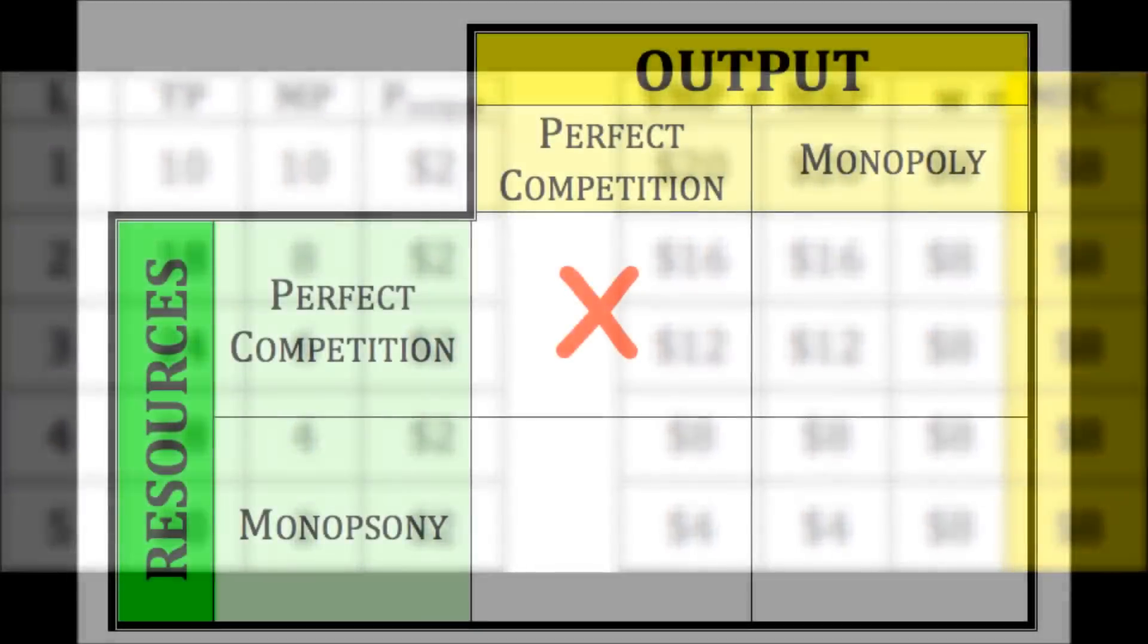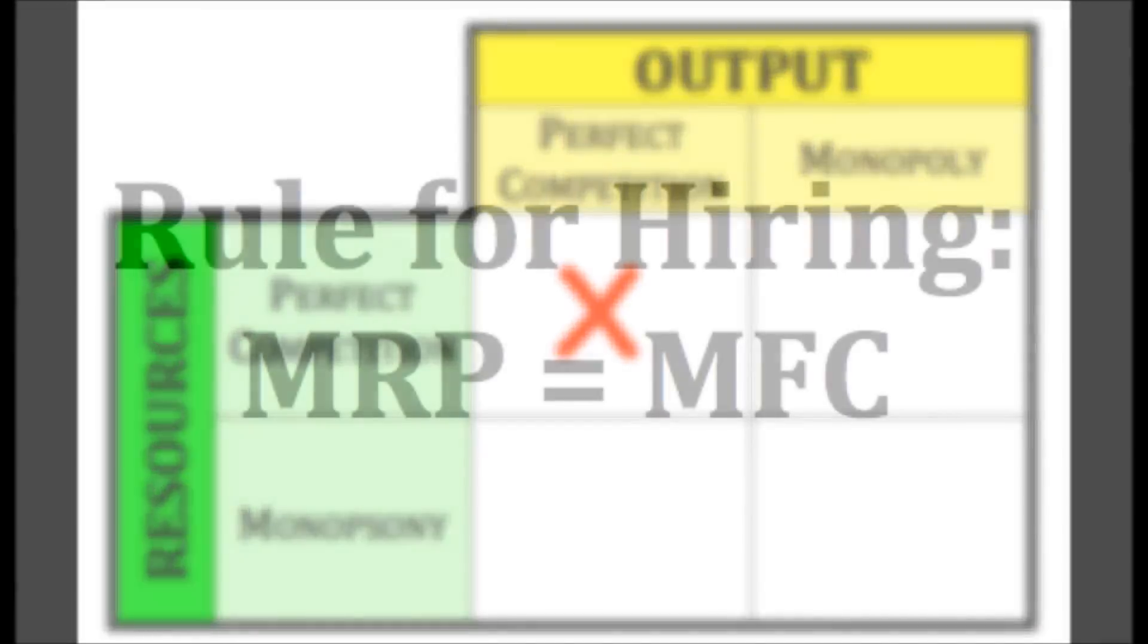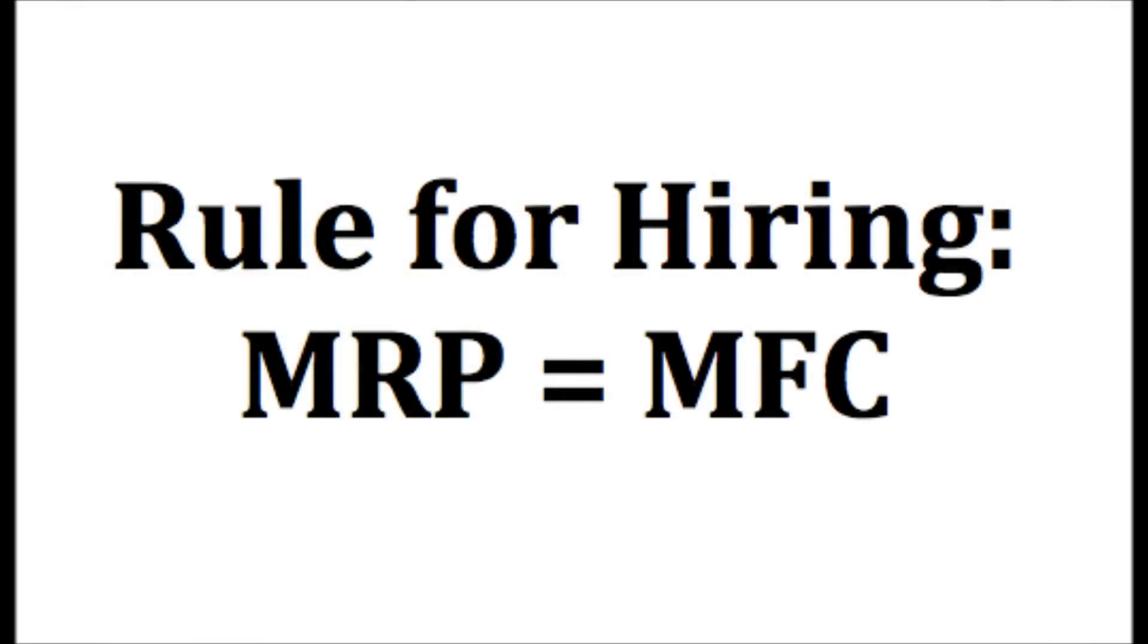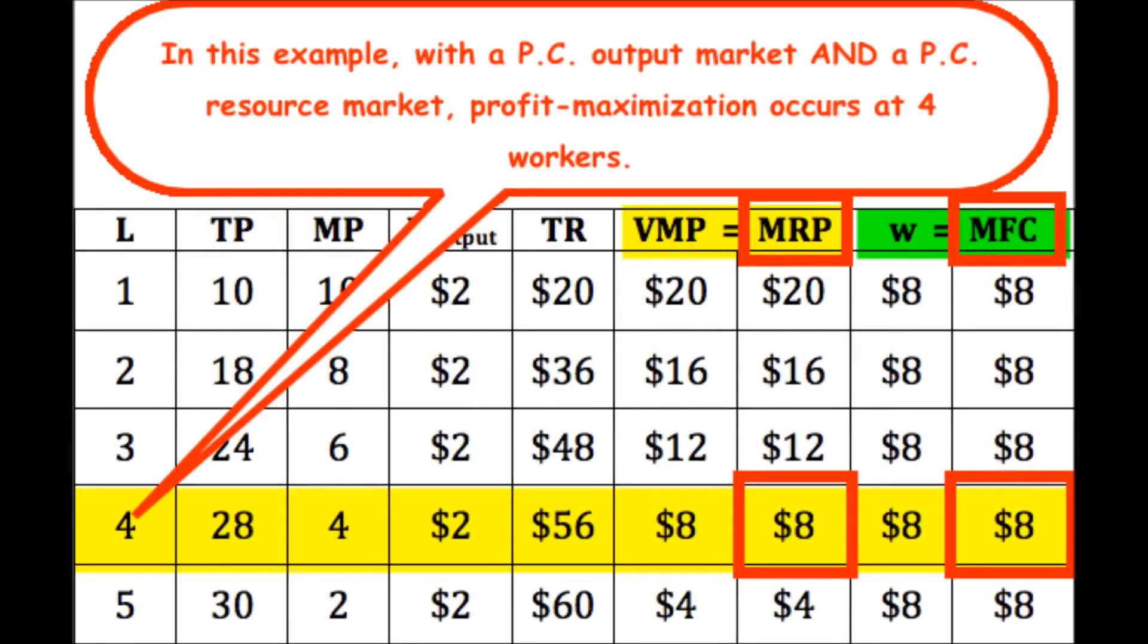So in the end, with perfect competition in both the output and factor markets, the profit maximizing rule, marginal revenue product equals marginal factor cost, is satisfied at four workers who each get paid a wage of $8.